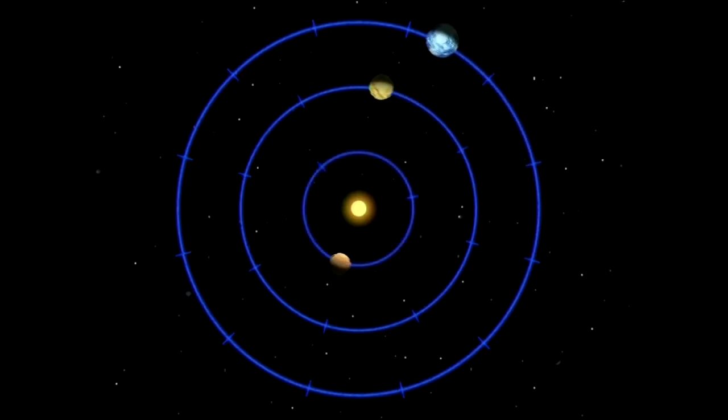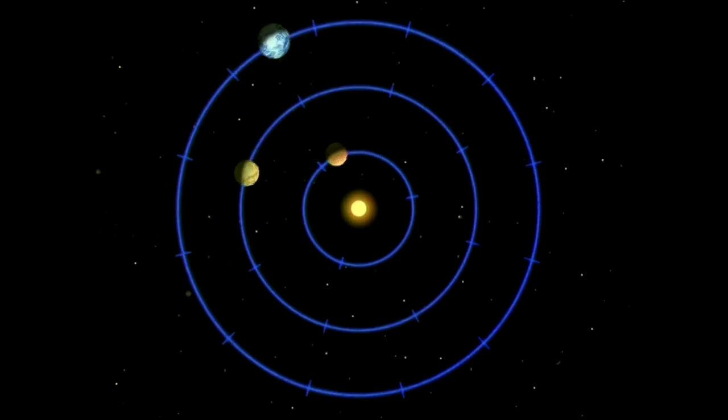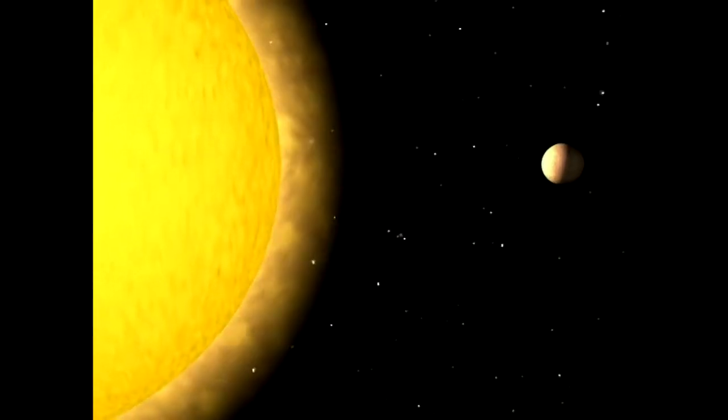Even closer to the sun, Mercury completes its orbit in less than three months. You'll find it hard to see Mercury. It's too near the sun.